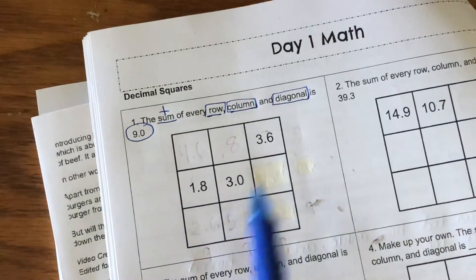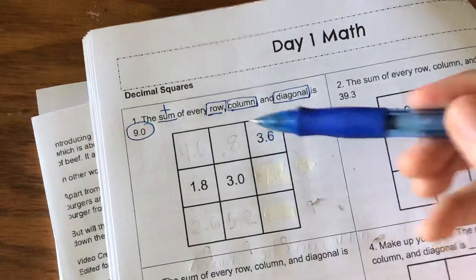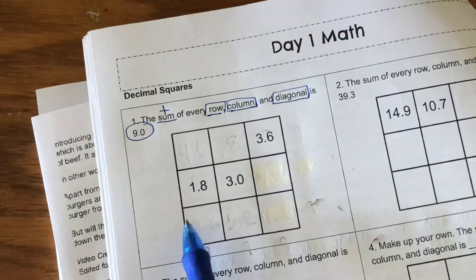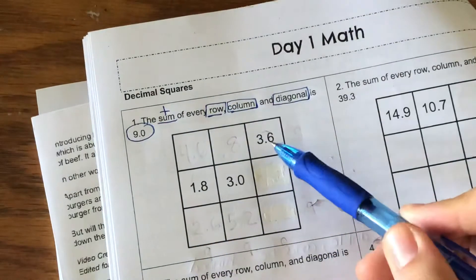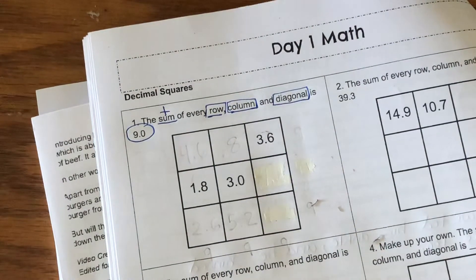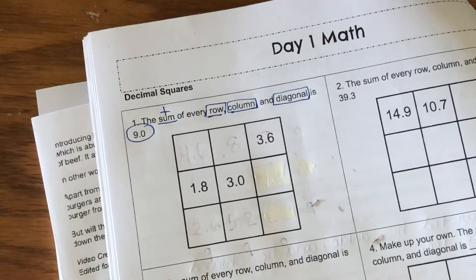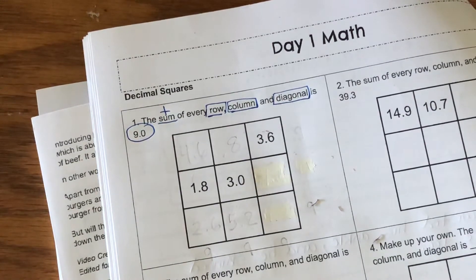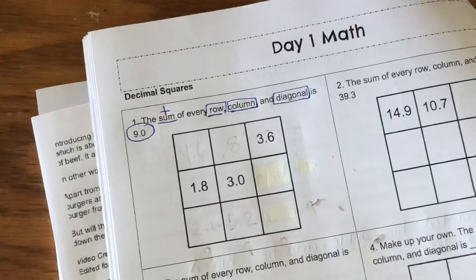You're gonna have one, two, three, four, five, six, seven, eight answers for each of these rows, columns, and diagonals. So we're gonna go ahead and start tackling this. My biggest recommendation is to complete whichever row, column, or diagonal has two of the three numbers.